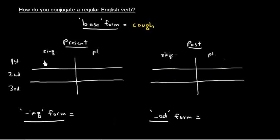But for now, let's just go with this. So I cough, you singular cough, he she it coughs—we just added an s there—we cough, you plural cough, they cough.